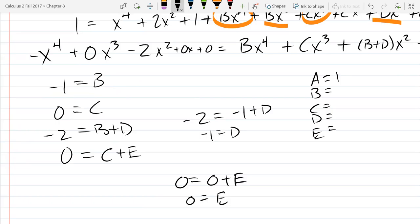So I'll just write them in order. a is one, b, negative one, c, zero, d, negative one, e, zero.